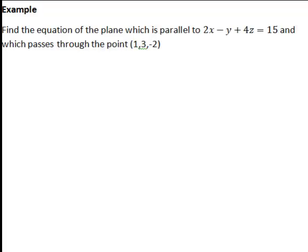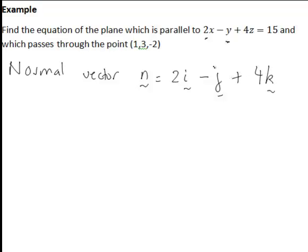So to apply this in practice, let's look at finding the equation of the plane parallel to the plane 2X minus Y plus 4Z equals 15, passing through the point 1, 3, negative 2. So here the normal vector to both our planes can be written in the form N equal to 2I minus J plus 4K.